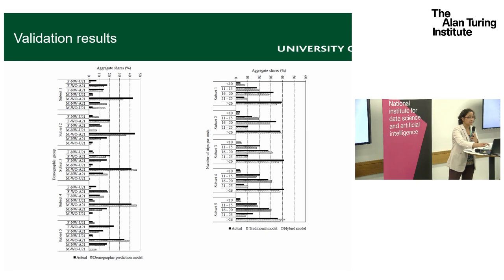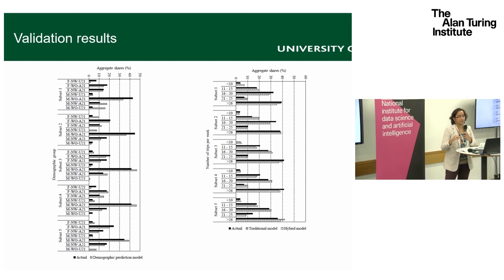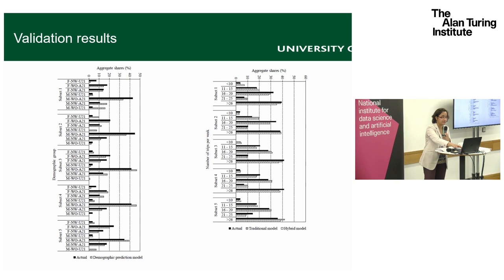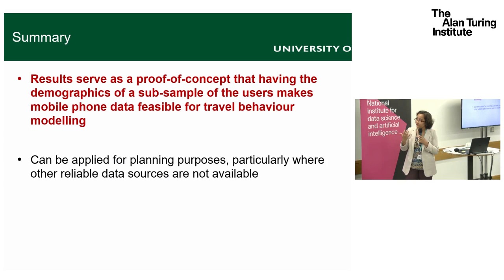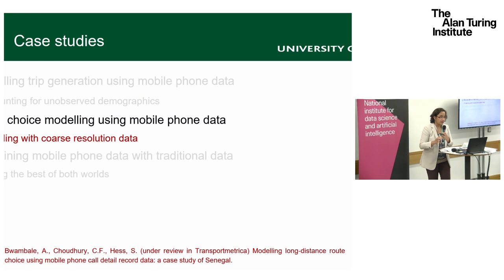We did some validation, comparing the model performance when demographics were known versus when they were predicted, and the results were reasonable. This was a proof of concept showing that having demographics for a subsample of mobile phone data users makes it feasible to apply the approach for econometric modeling of travel behavior.